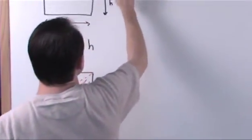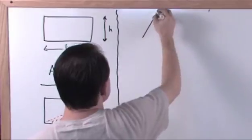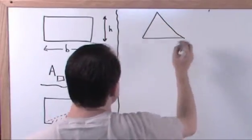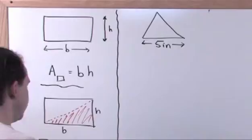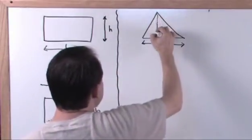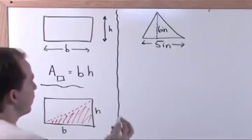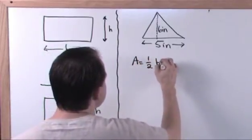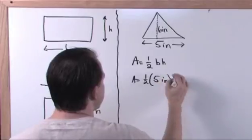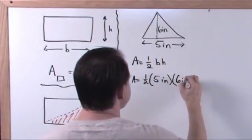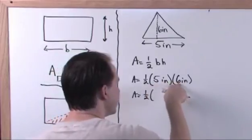Let's do an example. Say I have a triangle that is five inches along the base. They usually show a dotted line indicating the height, which is six inches. So the area is equal to one half times the base times the height: one half times five inches times six inches. Five times six is thirty, and one half of thirty is fifteen. Inches times inches is inches squared, so the area is fifteen inches squared.